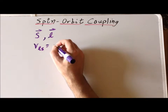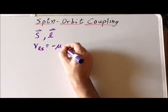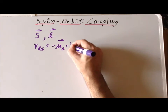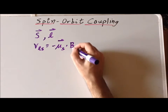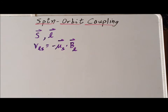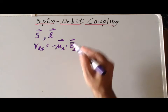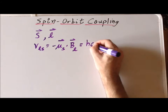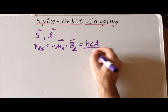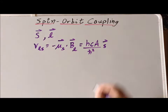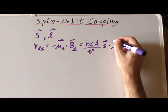So the orbital interaction can be written this way. Here's the magnetic moment with regard to the spin, written as mu sub s, a vector, interacting with the effective magnetic field generated by the orbiting electron, which we write as capital B sub L. The minus sign is merely to account for the fact that the nucleus and the electron have opposite spins. Filling in these particular values using quantum mechanics, we can write this as hc times capital A divided by h-bar squared. This is the spin angular momentum vector dot the orbital angular momentum vector.